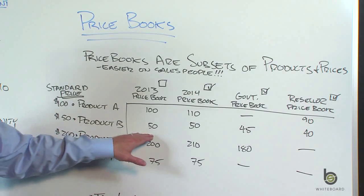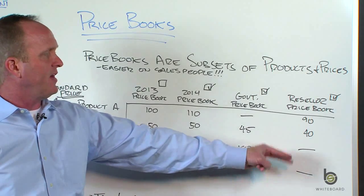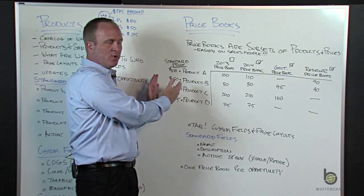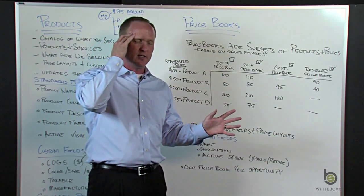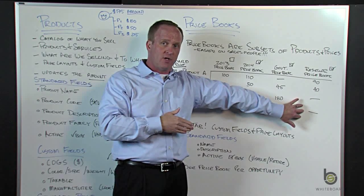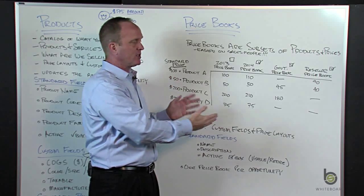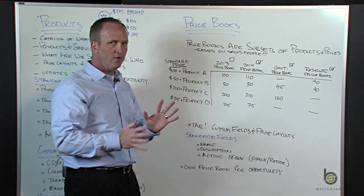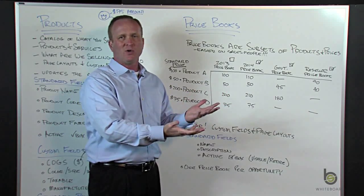Looking at some of the others — product B is $50, $50, government $45, reseller $40. Some products are not available in the government price book, and some are not available to resellers — maybe those are not-for-resale products. So what we're doing is taking our product catalog with default standard pricing, and when we start an opportunity, we pick a price book. Salespeople don't have to think about which products they're allowed to sell to the government, or what discounts apply to resellers — the price book handles that. When a salesperson kicks off an opportunity with multiple price books, it forces them down a path where they can only see the products available in that price book, and you get to set those prices.